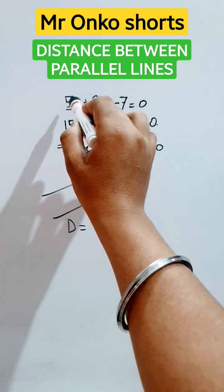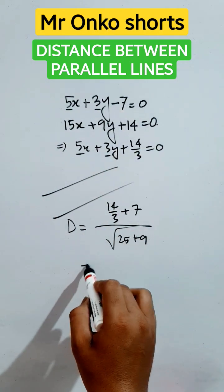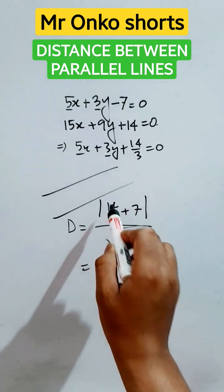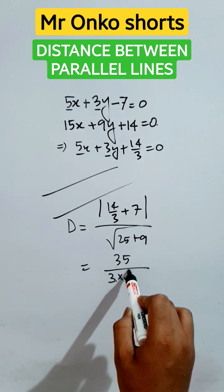root of square of 5, that is 25, plus square of 3, that is 9. And this must be in modulus, so it is minus 21 over 3 plus 14, that is 35, divided by 3 into root of 34.